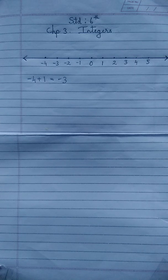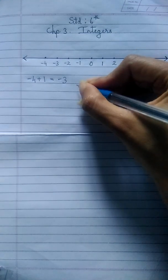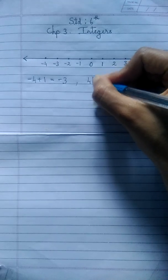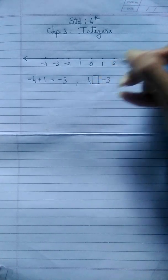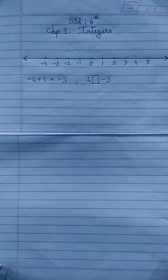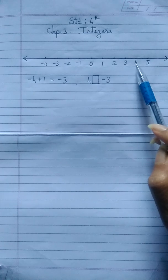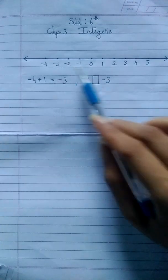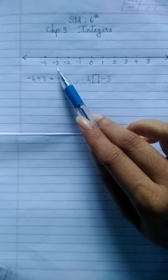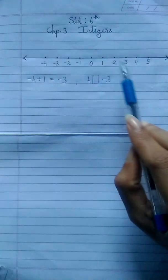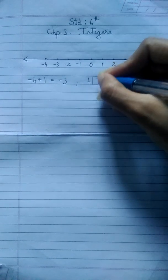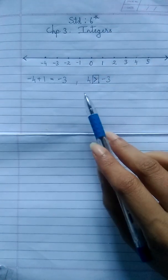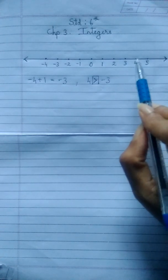Now let us solve some examples. We will take 4 and minus 3 and give them a comparison sign — smaller, greater, or equal to. All of us know that a positive number will always be greater than a negative number. So 4 is greater than minus 3. You will see that 4 is towards the right on the number line. Between the two numbers, 4 and minus 3, 4 is to the right. The number which is to the right between the two given numbers on the number line will always be greater.